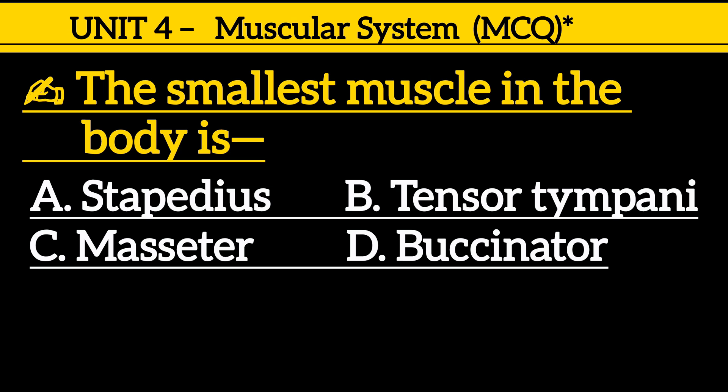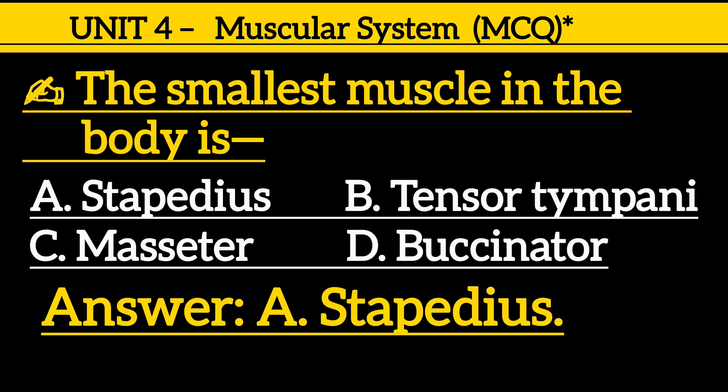Next one is: the smallest muscle in the human body is — option A: stapedius, option B: tensor tympani, option C: masseter, option D: buccinator. Correct answer is option A, stapedius.